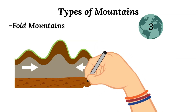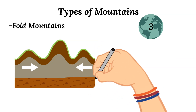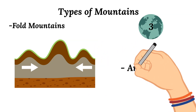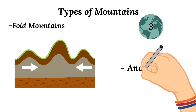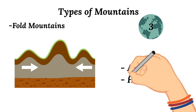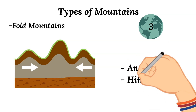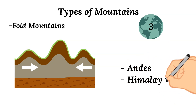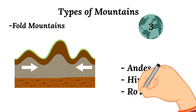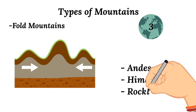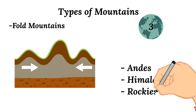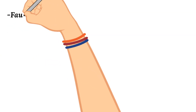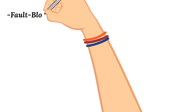Some examples of mountain ranges that include fold mountains are the Andes, the Himalayas, and our very own Rockies, which are in the United States.